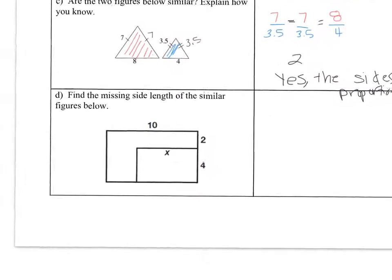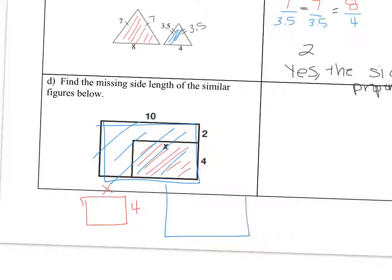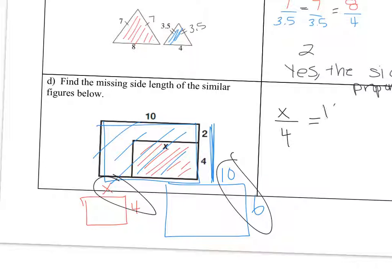Okay, next one, find the missing side lengths of the similar figures below. So look at this red one. I'm just going to kind of split it up. The red one is 4 by x. And then the big blue one is, this distance is 6. So 6 to 10.